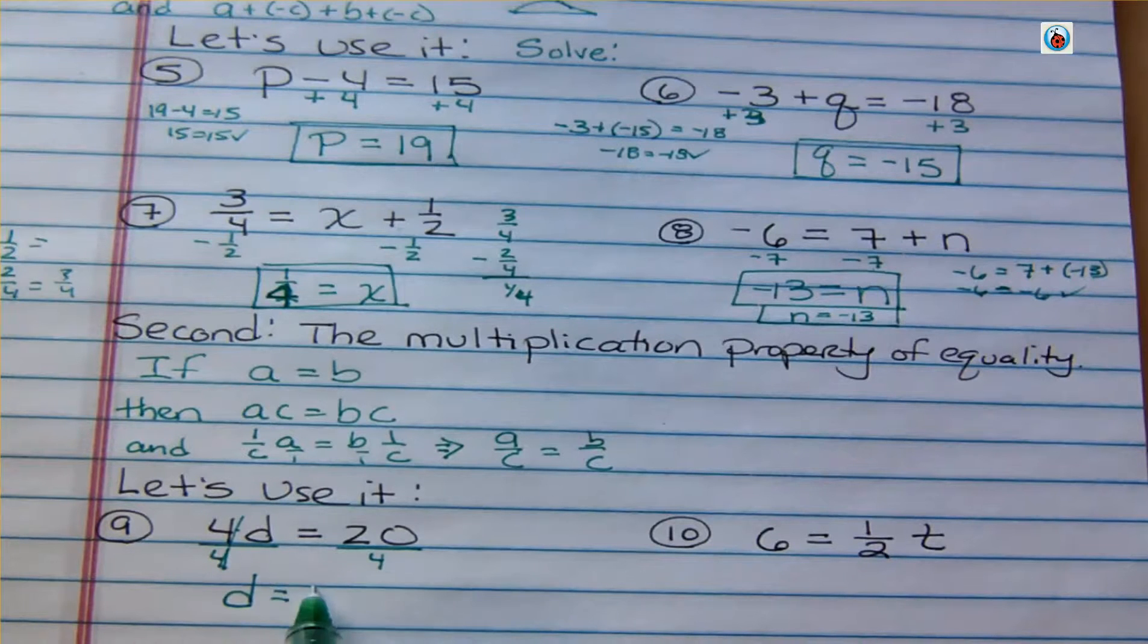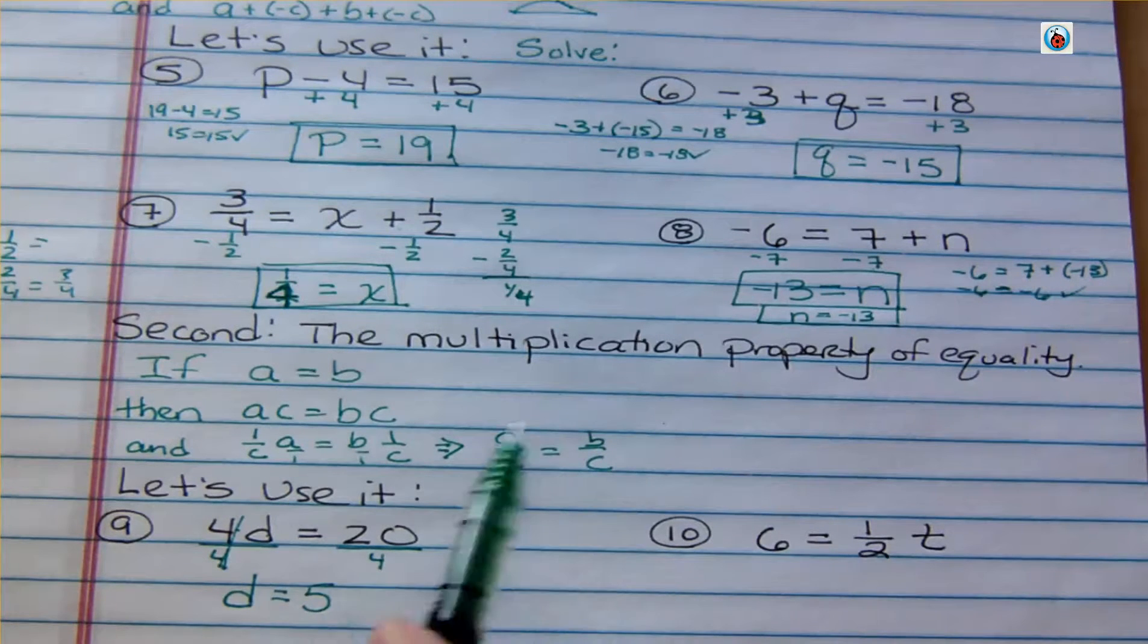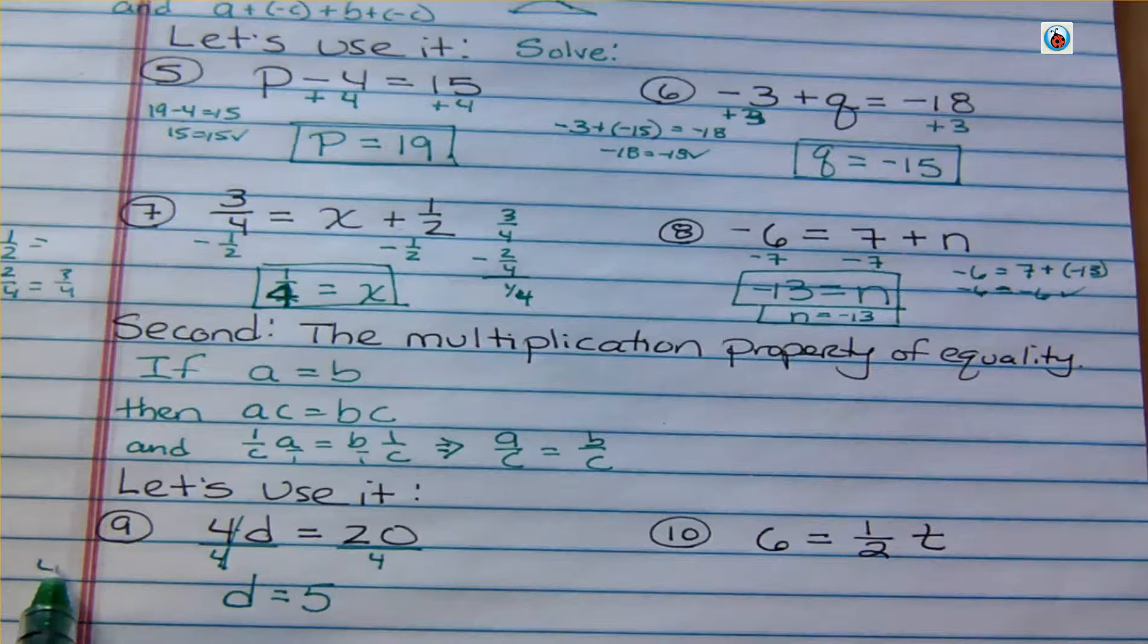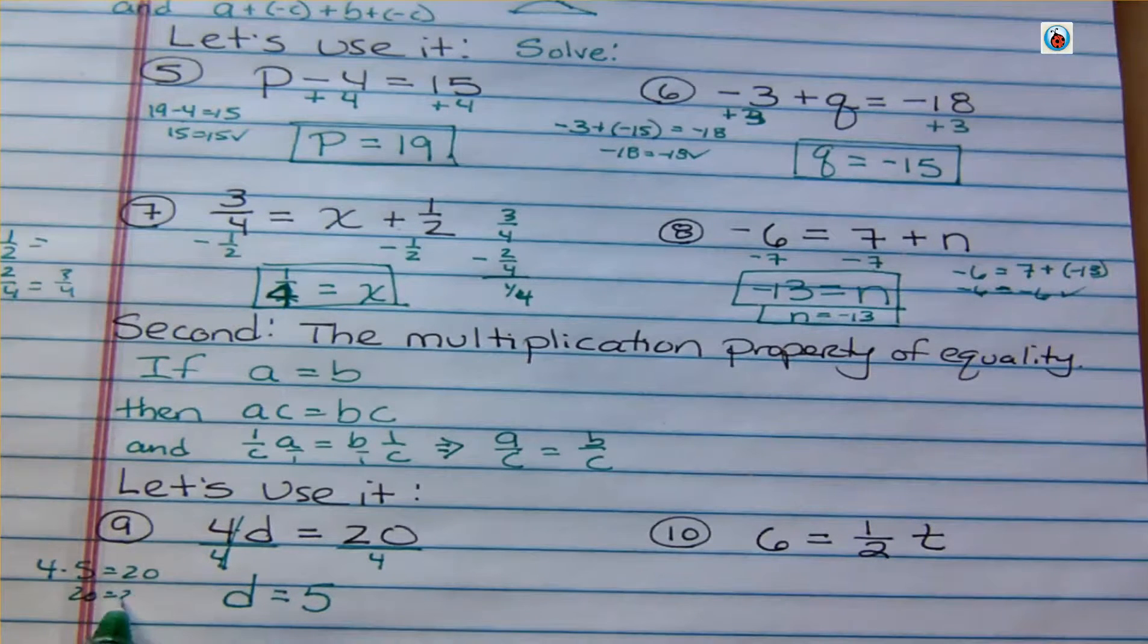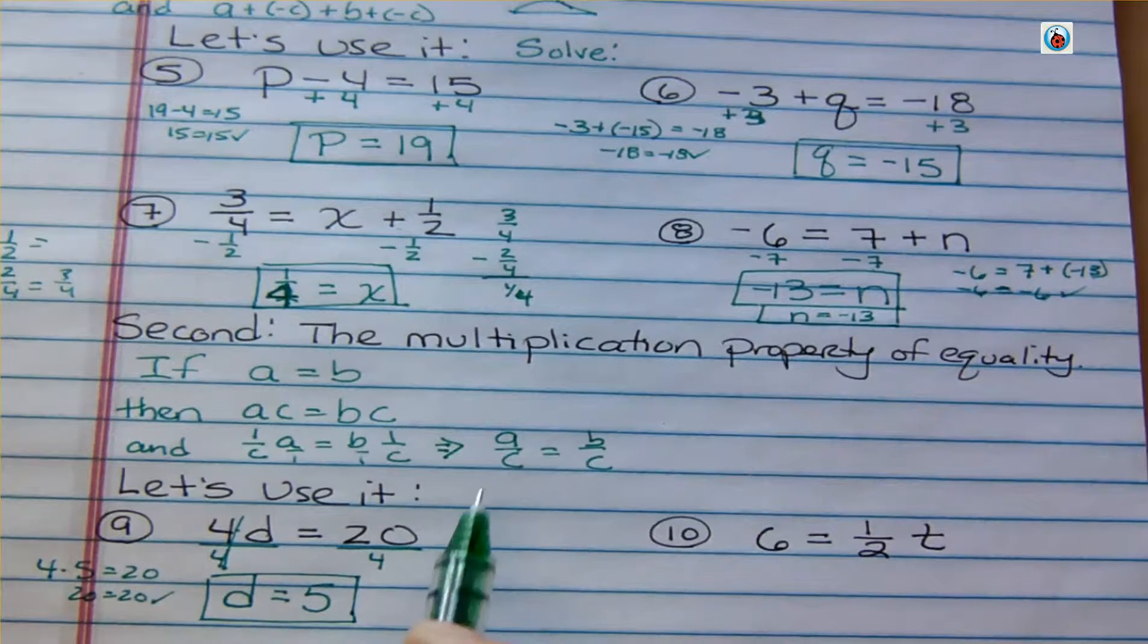20 divided by 4 is 5. And now we can see, is that true? If we have 4 times 5, would that be 20? And of course, 20 equals 20, so that checks out. The solution to our equation means that we found out what D was. D was our variable.